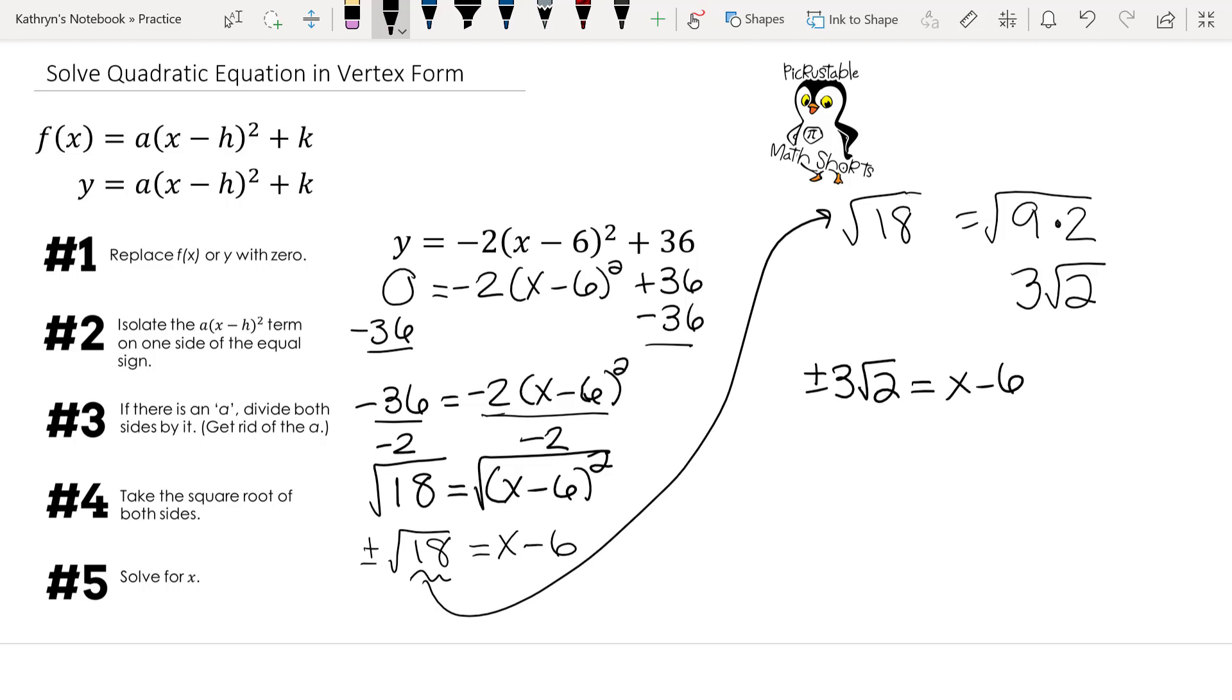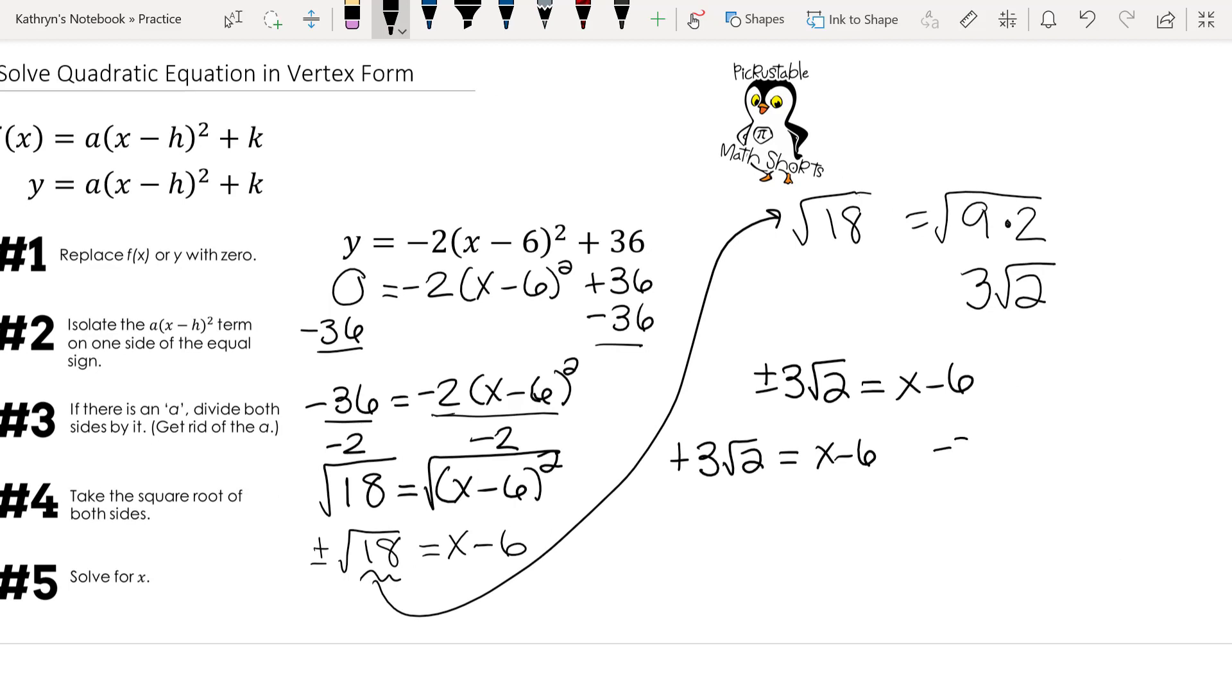Let's make our two equations. We'll have plus 3 times the square root of 2 equals x minus 6. And we'll have negative 3 times the square root of 2 equals x minus 6.